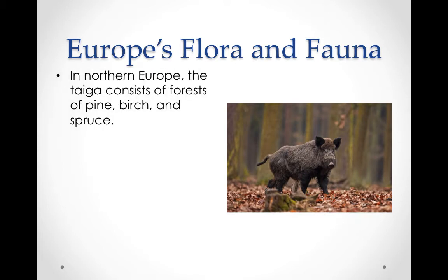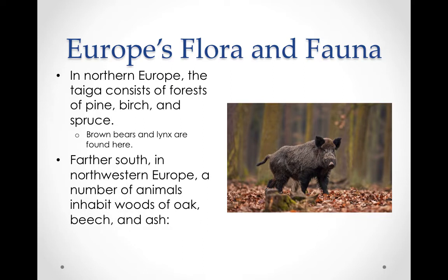In northern Europe, the taiga — a heavily forested pine forest of birch and spruce — is home to animals such as brown bear and lynx. Further south in northwestern Europe, a number of animals inhabit woods made of oak, beech, and ash, such as wild boar, deer, and squirrels.